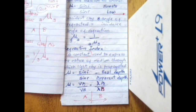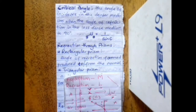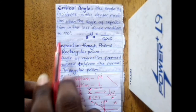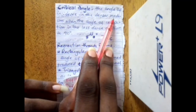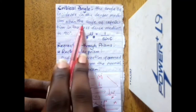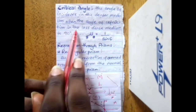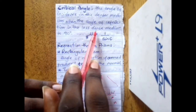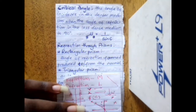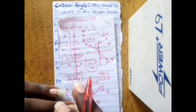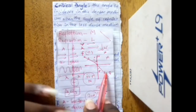The critical angle is the angle of incidence in the denser medium when the angle of refraction in the less dense medium is 90 degrees.